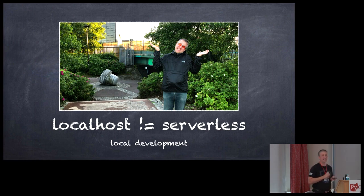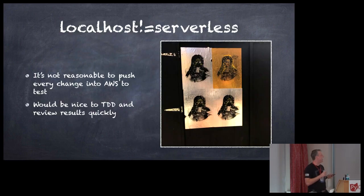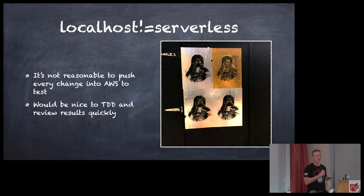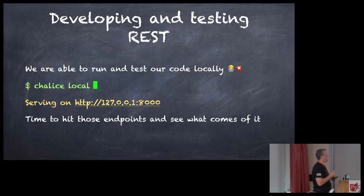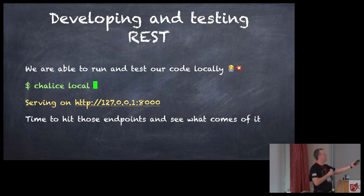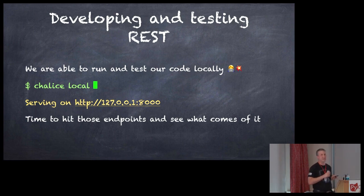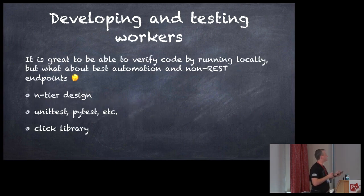So, local host — it's not serverless, right? How do we actually test this and run it locally? It's not reasonable to deploy every time to test. We have to TDD and get our results. Chalice local will spin up a server for you, and for REST endpoints you're right there — it just does it for you. You hit the endpoints and debug your code. It's actually pretty wonderful in that sense.